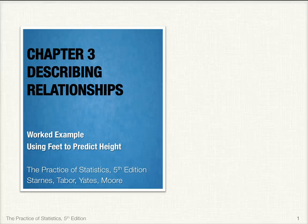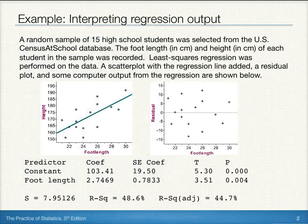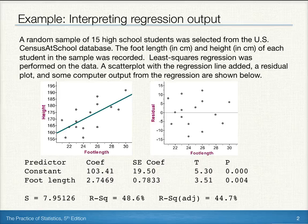Hi, this is Jason Molesky. In this example, we'll review how to interpret regression output. A random sample of 15 high school students was selected from the U.S. Census at School database.